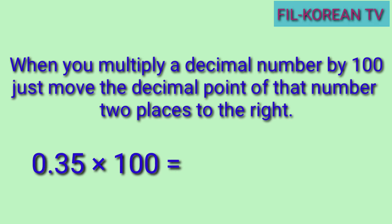Example: thirty-five hundredths times one hundred. Okay, ang gagawin natin, i-move natin ang decimal point ng thirty-five hundredths ng dalawang ulit pakanan — one, two. Okay, nasa labas na ngayon ang decimal point. Kaya ang answer natin ay whole number na thirty-five.